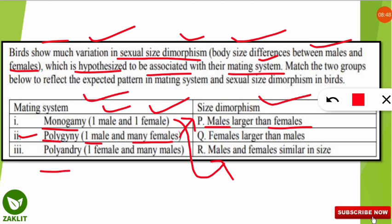In polyandry — 'andri' refers to the male part — many males mate with one female. In this mating system, females are hypothesized to have larger body sizes compared to males. These are important terms and hypotheses based on sexual size dimorphism that students should note, as questions can come from here with various twists.